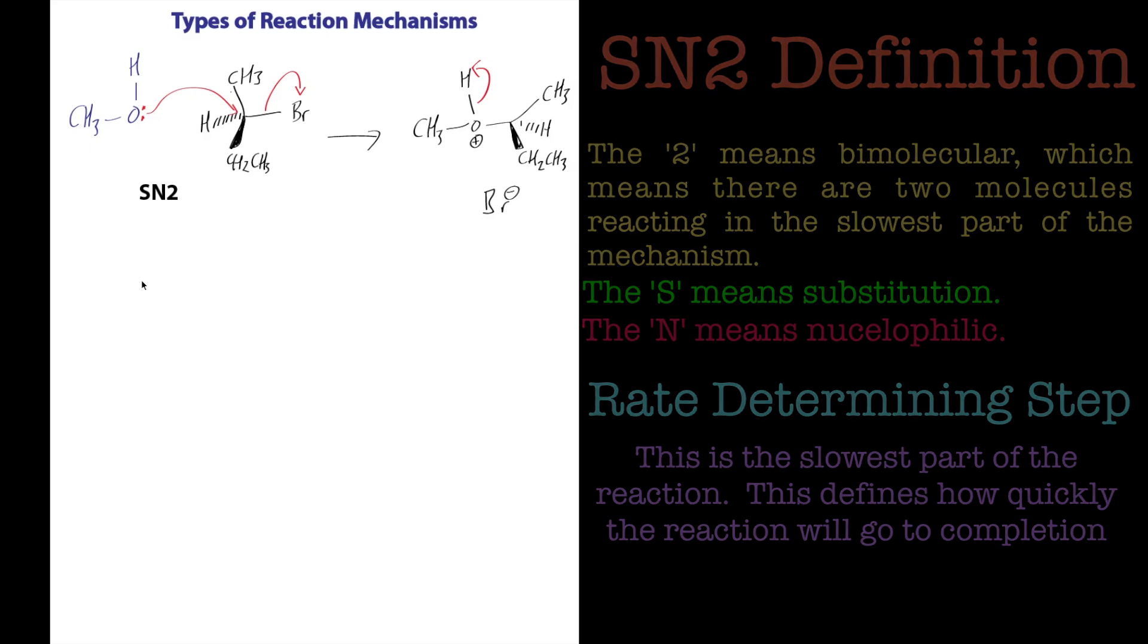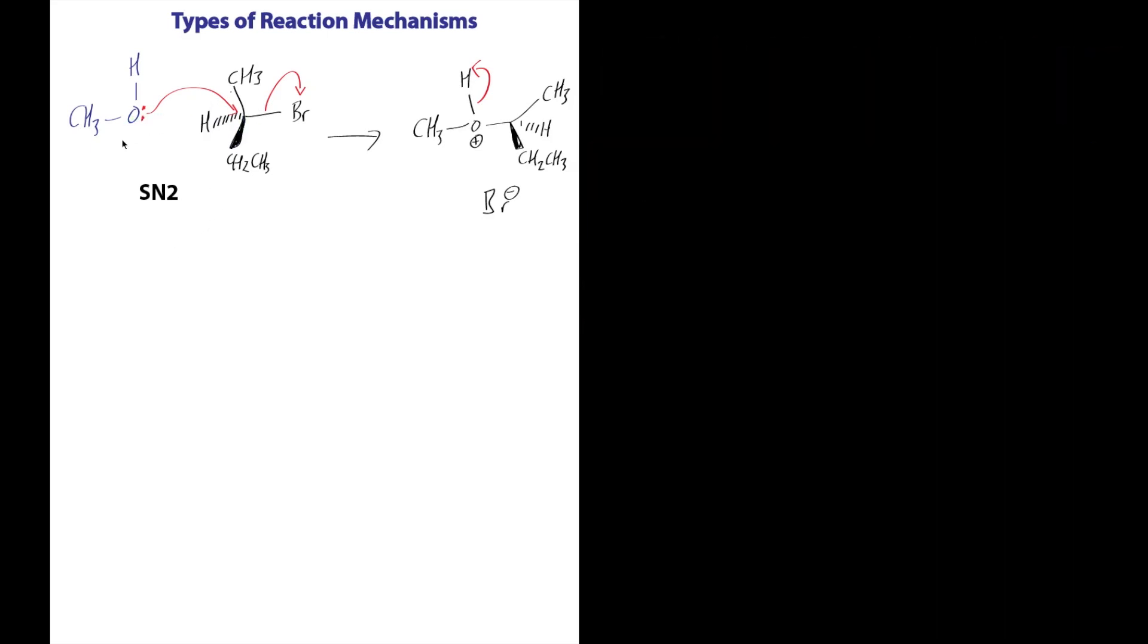OK, so what would happen then if the slowest step wasn't the two species coming together? Let's imagine that the slowest step is actually just the bromine and the carbon bond breaking apart. So let's just get rid of that. Let's draw that again, actually. So in this example, we've got CH3, CH2, CH3, H, Br. Now, in this example, the slowest step actually occurs like this. That comes off. That's the first step. Let's change my color. And that leaves what's called a carbocation.